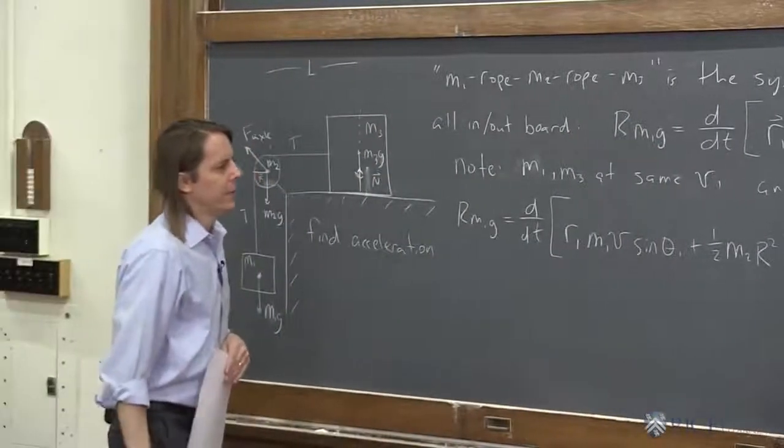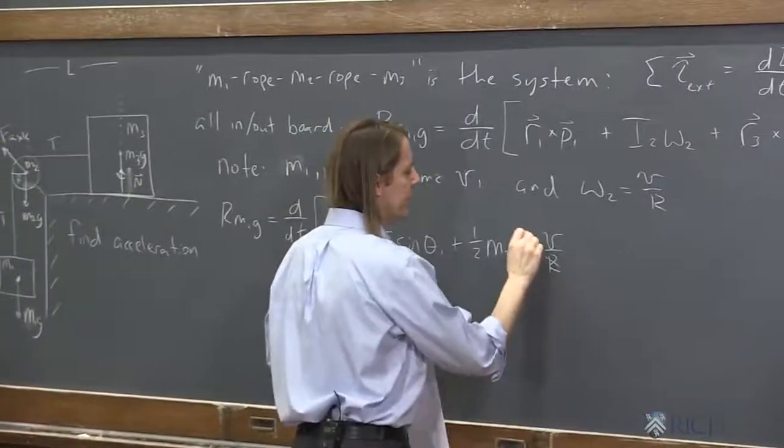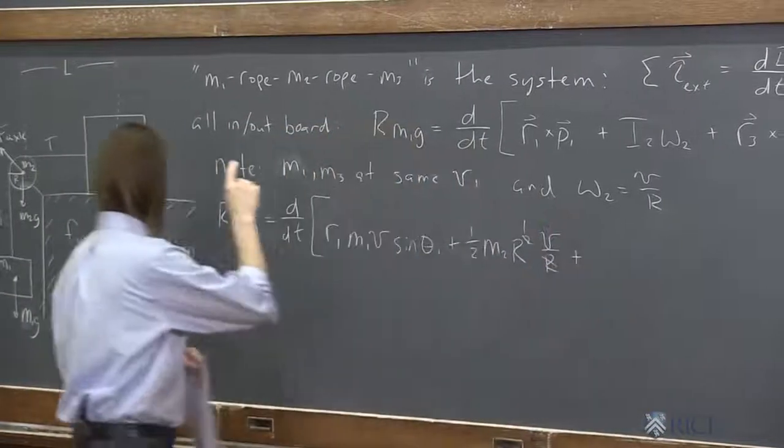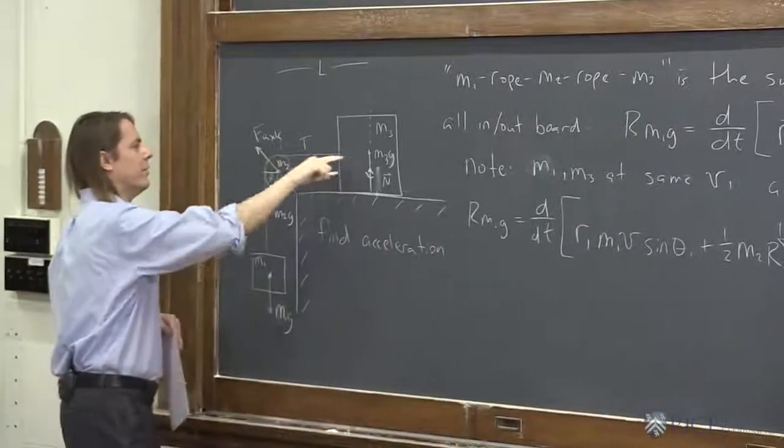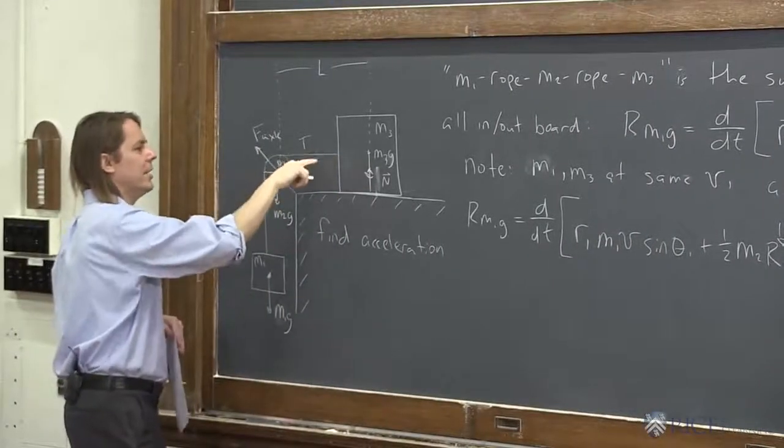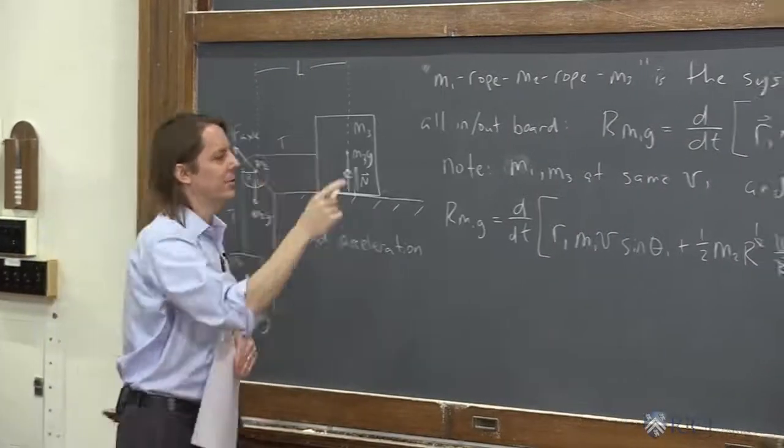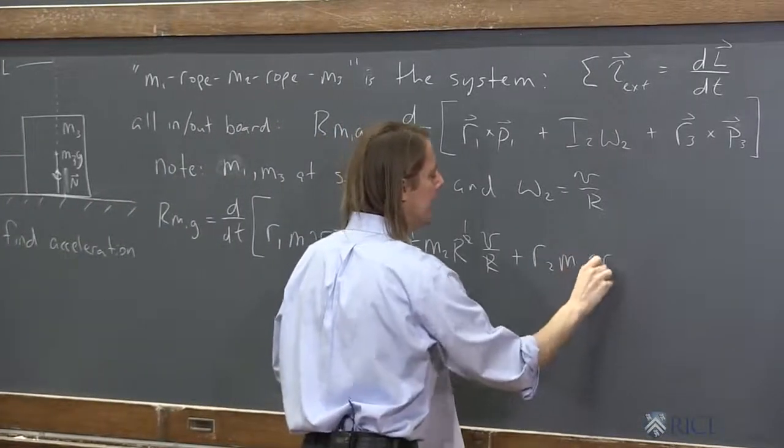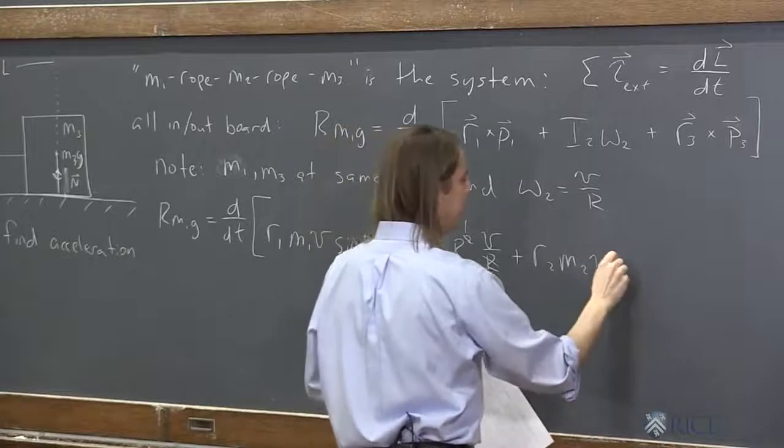So clearly we can see, we can get rid of one of these R's. There we go. And then this one, mass 3, we got its R vector from here to here. Again, we'll make up some theta, we'll call it theta 2, and this will be R2 M2 V, same V, sine theta 2.